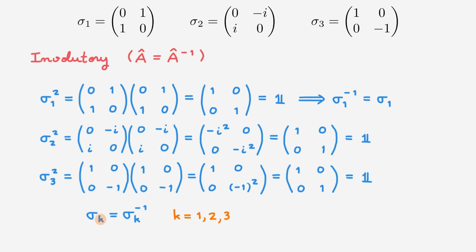In the previous slide we established that the Pauli matrices are hermitian. Bringing these two insights together, we can conclude that the inverses of the Pauli matrices are equal to their adjoints, which means that the Pauli matrices are also unitary.